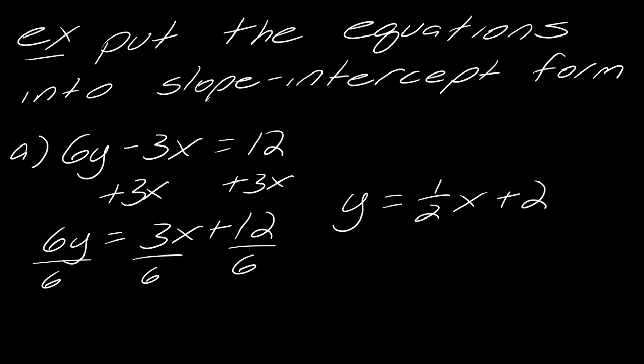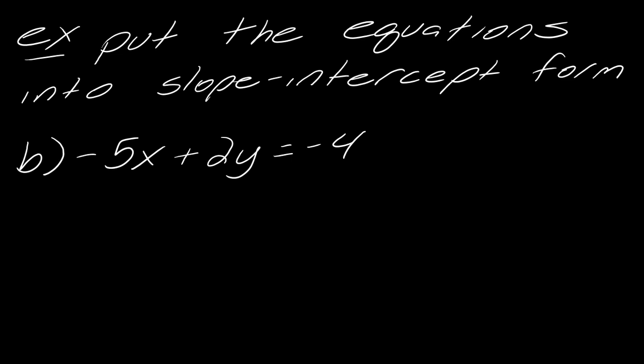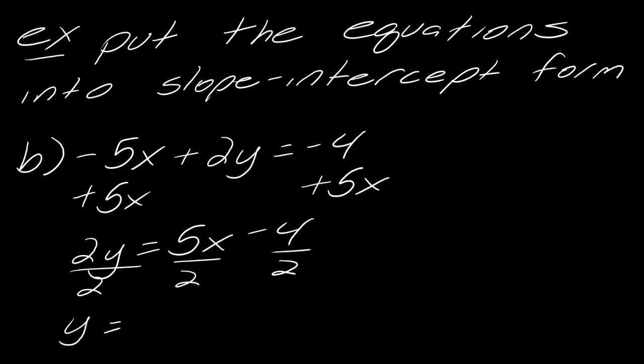I've got one more example of this. This is a super quick video. So if I wanted to put this particular equation into slope-intercept form, we've got -5x + 2y = -4. So first things first, bring the x over to the other side like this. So I get 2y = 5x - 4. And then divide each side by 2 to get y = 5/2x - 2. And so now we've got it in the slope-intercept form, so we're good to go.